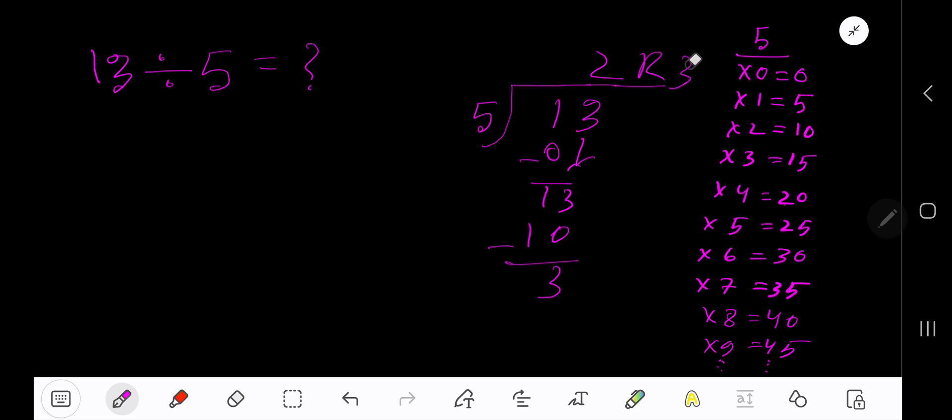If you want to write your answer in decimal form, then place a decimal here. Add a number of zeros. Bring down the first zero. Before this zero, there is a decimal. The decimal must come to the quotient directly.